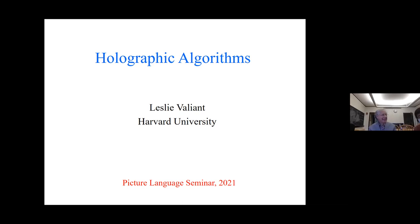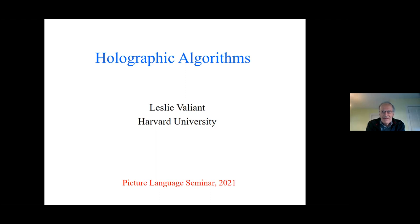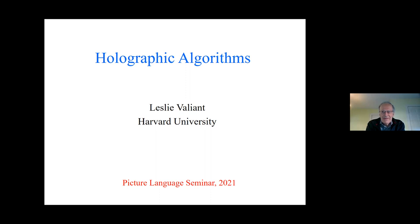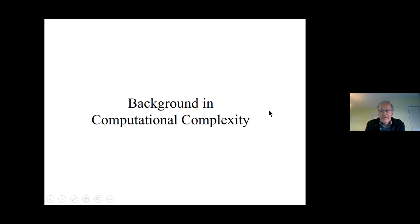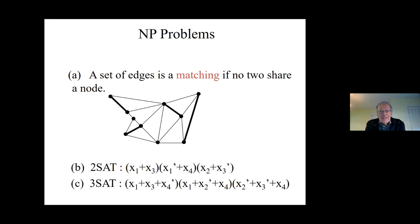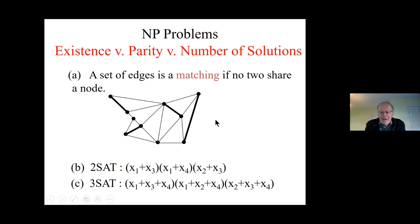This arose in the context of computational complexity, where one calls a function a problem. So a problem is something like: you've got a graph and you define some sort of structure in it. A matching is a subset of edges such that no two edges in the matching use a common vertex. The dots and lines form a graph, and the four heavy lines I've drawn form a matching in it.